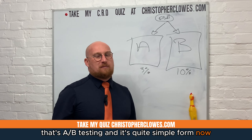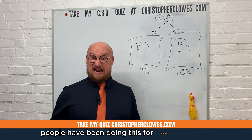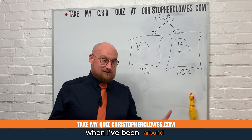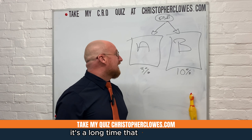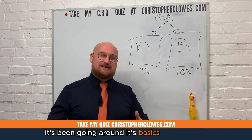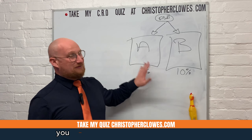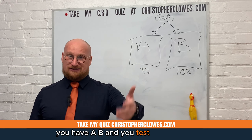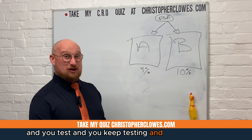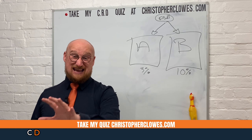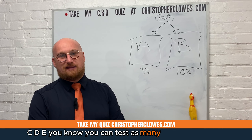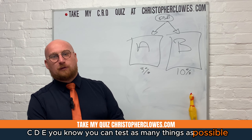People have been doing this for years — it's been around a long time. It's a basic of marketing: you have A and B, and you test and test and test. You keep testing, and you could go A-B-C-D-E — you can test as many things as possible.